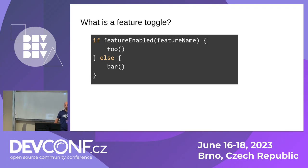So what is a feature toggle? A feature toggle is essentially a branching in your code asking: if this feature is enabled, then do this, otherwise do that. That is essentially what a feature toggle is.